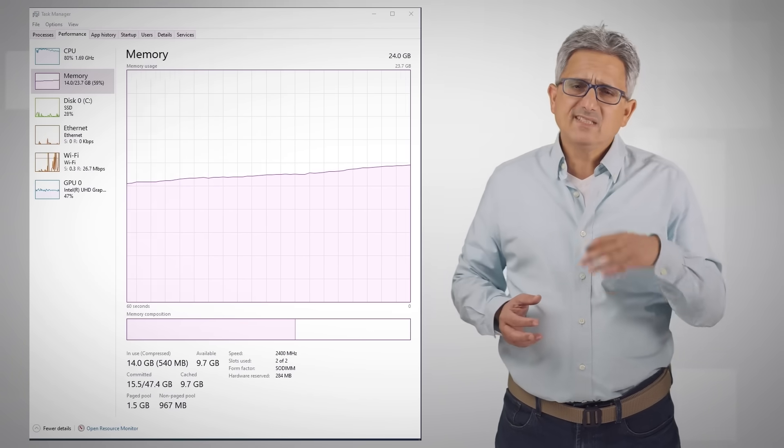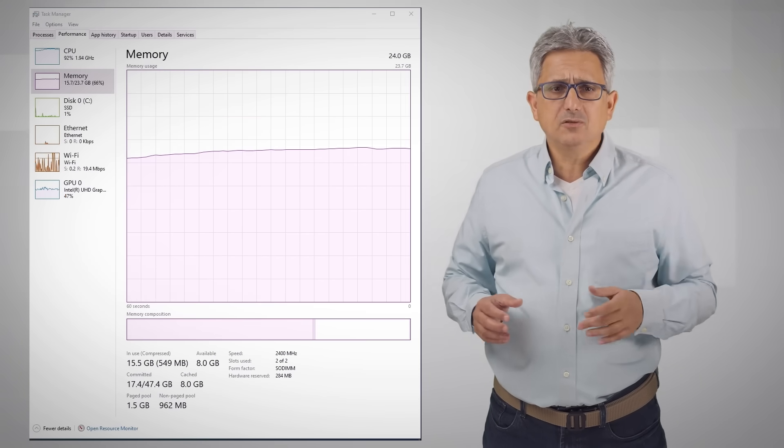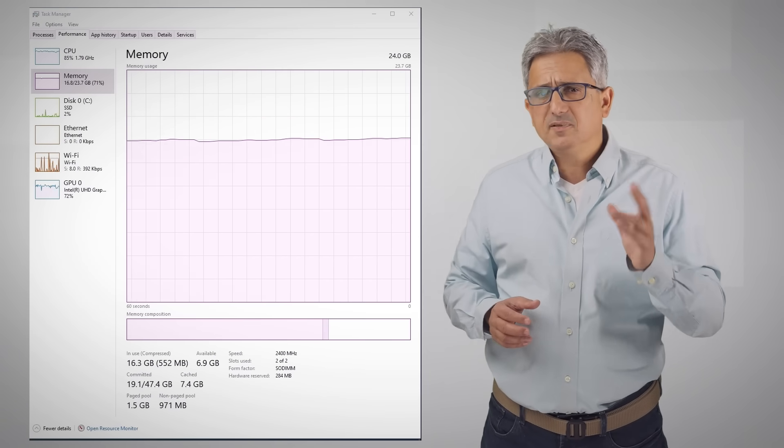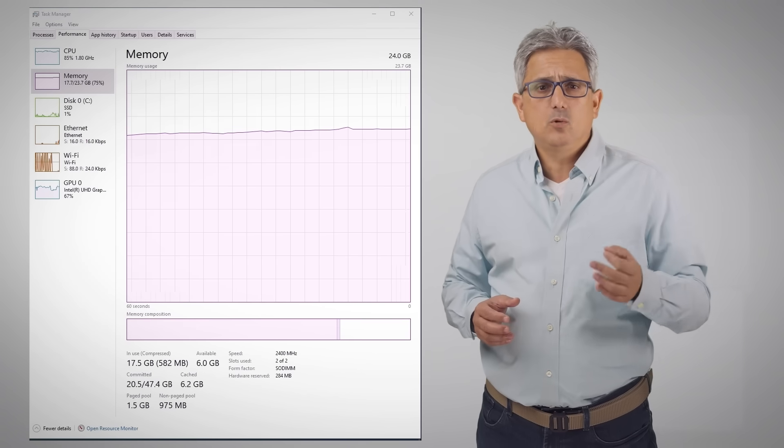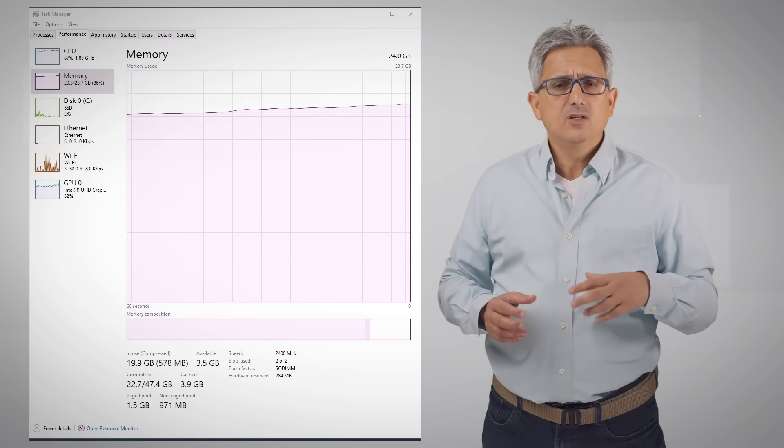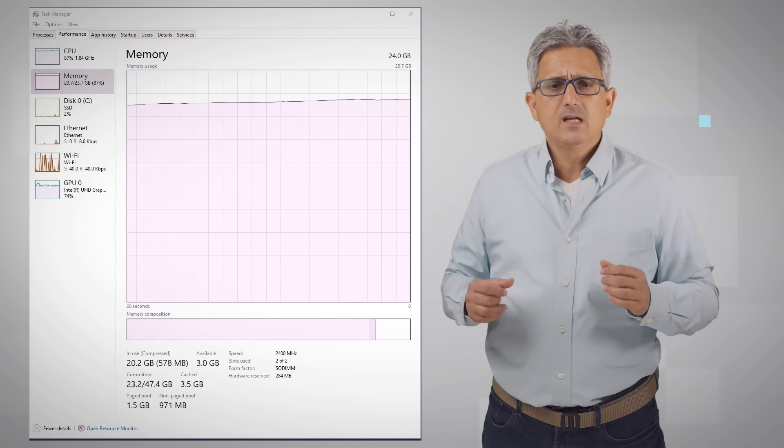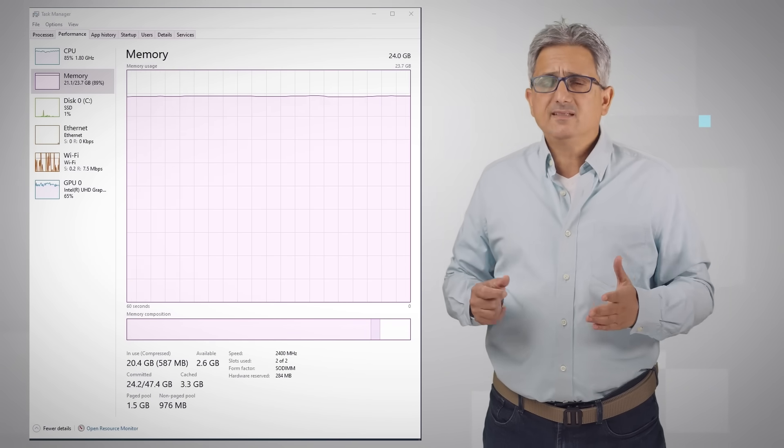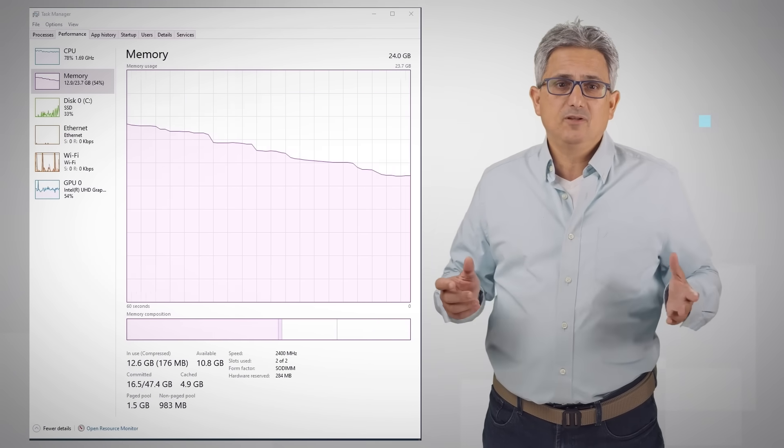A model with 70 billion parameters, which is not even considered very complex these days, represented in bfloat16, needs 140 GB of memory just to load the parameters. A typical desktop has 8 or 16 GB of RAM memory.